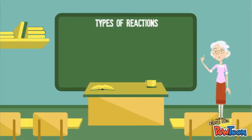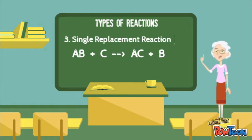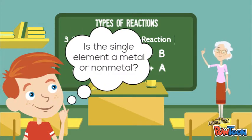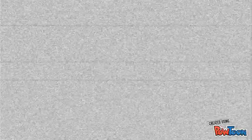The third type of reaction is a single replacement reaction where you have reactant AB plus C yields products AC plus B, or AB plus C yields CB plus A. How do you know the difference? You have to look if the single element is a metal or a non-metal.